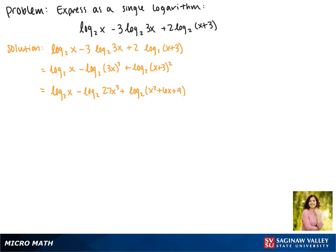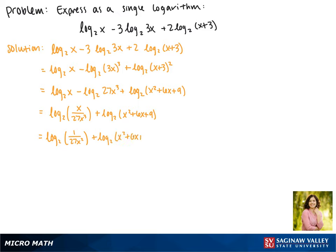Now we can combine our first two terms. Since they're logarithms with the same base that are being subtracted, the insides get divided. So this becomes the log base 2 of x divided by 27x cubed, plus the log base 2 of x squared plus 6x plus 9. The x over 27x cubed simplifies, giving us the log base 2 of 1 over 27x squared, plus the log base 2 of x squared plus 6x plus 9.